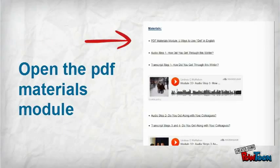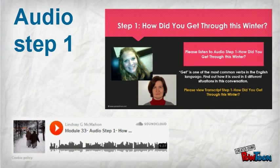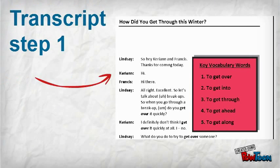Choose a module that works for you. Start by opening the PDF — that is your guide for the whole module. Listen to audio step one. This is a total, natural, unscripted conversation between real American English speakers. You can listen alone first to get the general idea, then test your understanding with the transcript in step one to find any new words that you didn't understand.